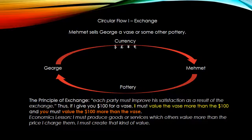George is going to give Mehmet $100. Mehmet is going to surrender the vase. This must mean that George wants the vase, values the vase more than he does his $100. And for Mehmet, the $100 is worth more to him than the vase. So as a result of the transaction, both parties are better off. Both have improved their position.